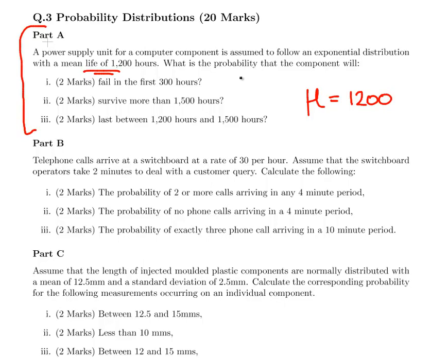So the simple enough question is, what is the probability that the component will: one, fail within the first 300 hours; two, survive more than 1,500 hours; or three, last between 1,200 and 1,500 hours. Now to assist us, what we're going to do is go down to our formula sheet.